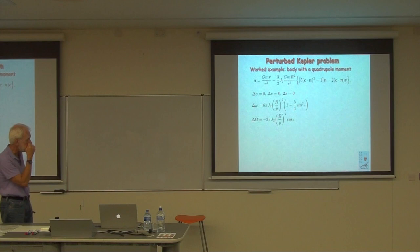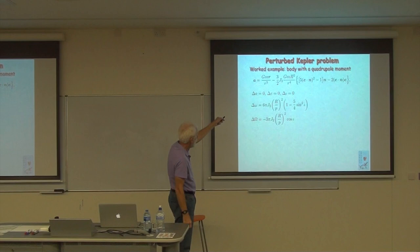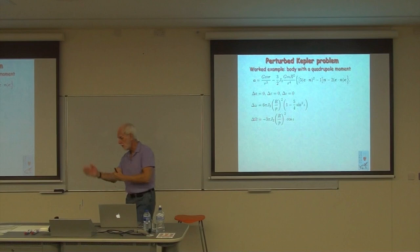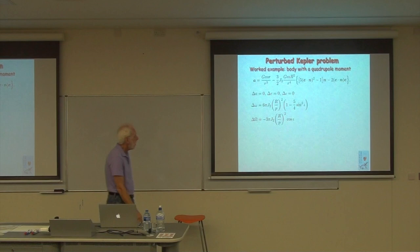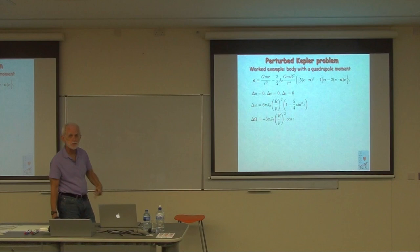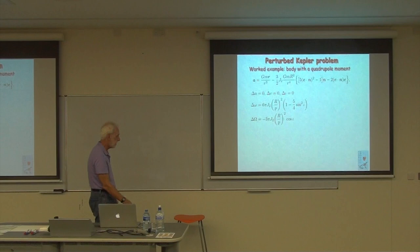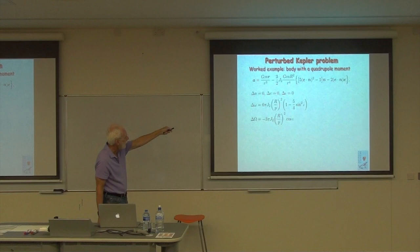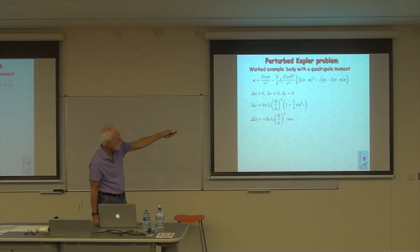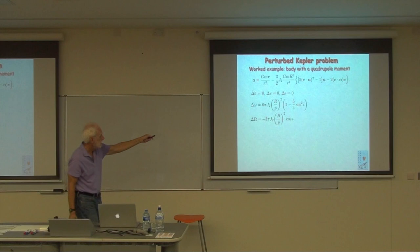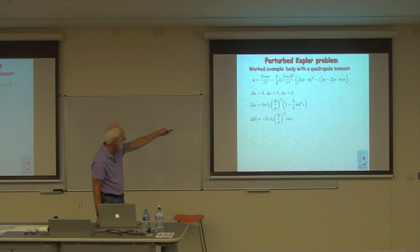Plugging this into our Lagrange planetary equations for perturbed orbits, taking the radial component, the tangential component, and the component out of the plane, then averaging over one orbit of our binary system to get secular effects — there will be lots of periodic oscillations of all the orbit elements, but we really care about secular changes, changes that grow time after time and get bigger and bigger. When you do that, you discover that A, E, and I are all constants. The energy is constant; this is a conservative equation, so A is a constant, and so on.